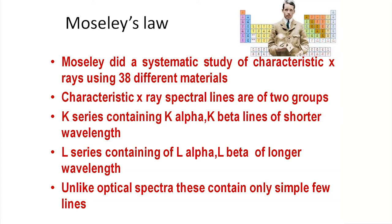One is the K series, having K alpha, K beta, and K gamma radiations, because of the transition of higher energy electrons to the K shell. Another one is the L series, which arises because of the transition of electrons from higher energy levels to the L shell. Unlike optical spectra, these x-radiations contain only a few simple lines.